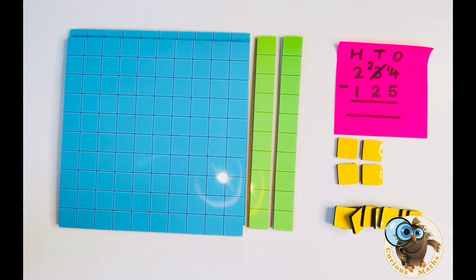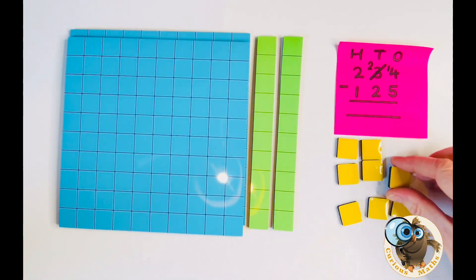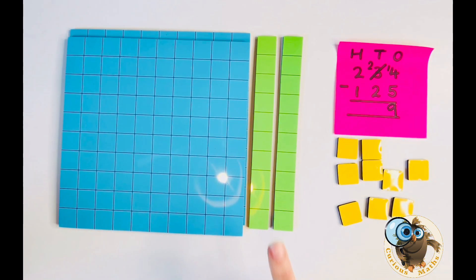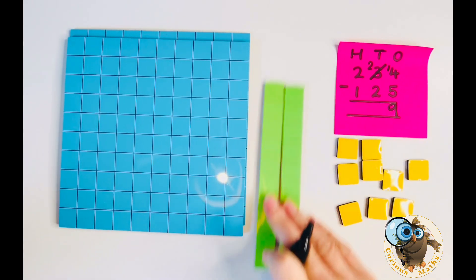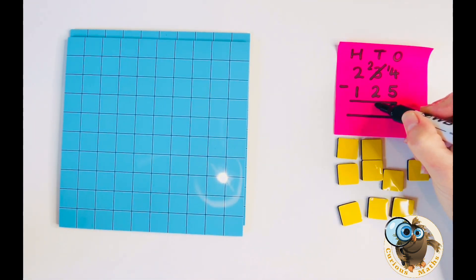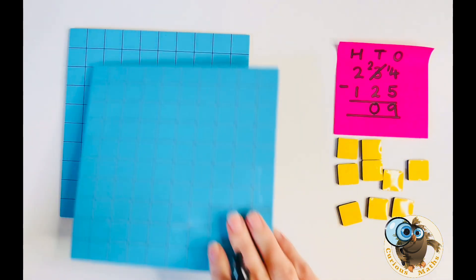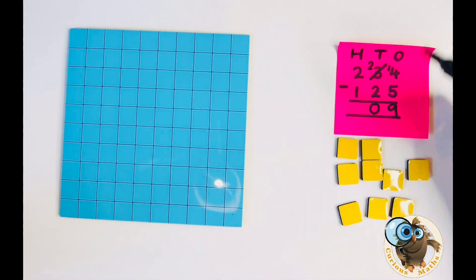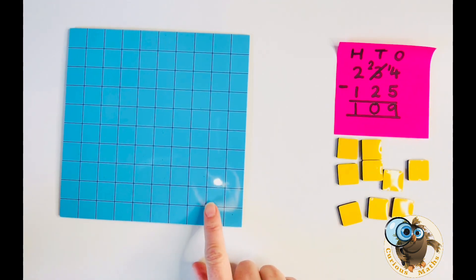So now we have 14 ones and we have to take five ones away. How many ones do we have left? We have nine ones remaining. So we've got two tens and we need to take two tens away. How many tens have we got left? We have zero tens remaining. We have two hundreds and we need to take one hundred away. How many hundreds do we have? One hundred remaining and our build then will match our answer. So 234 subtract 125 equals 109.